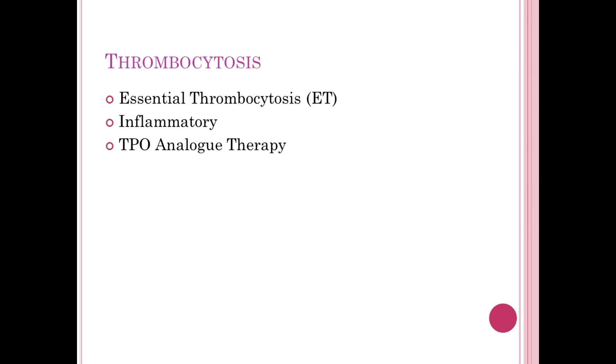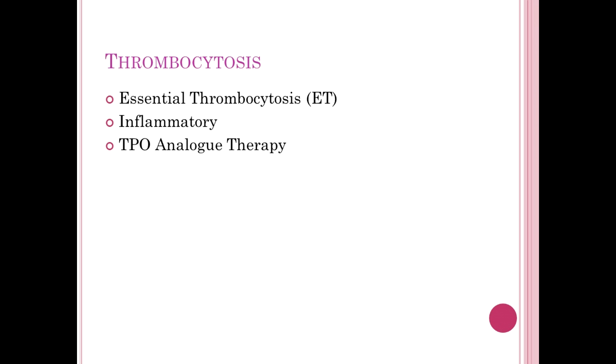Thrombocytosis is simpler — primary (essential thrombocytosis, ET) involves an acquired JAK2 mutation driving excess platelet production. Normal range is 150–450; ET patients often climb above 700 and can reach 1,000–2,000, at which point aspirin is given due to risk of inappropriate clot formation. Secondary thrombocytosis is inflammatory — platelets are an acute phase reactant. Thrombopoietin (TPO), produced by the liver, drives platelet production; synthetic TPO can be given therapeutically, and excessive dosing produces thrombocytosis.